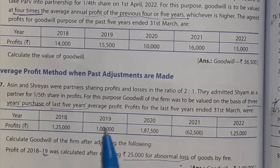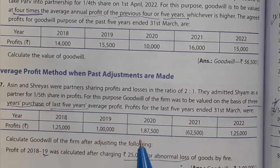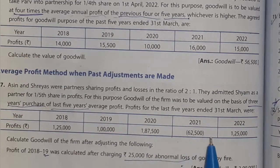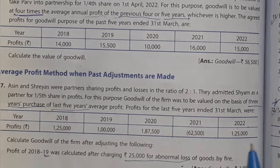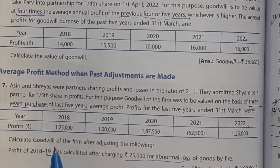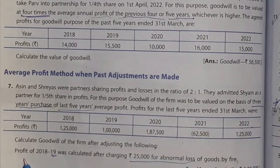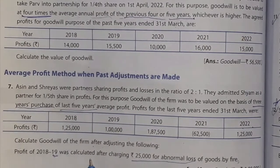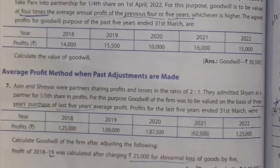Profits for the last 5 years under 31st March: Year 2018 profit was 1,25,000; 2019 profit was 1,00,000; 2020 profit was 1,87,500; 2021 profit was 62,500; 2022 profit was 1,25,000. Calculate goodwill of the firm after adjusting the following: profit of 2018 and 2019 was calculated after charging 25,000 for abnormal loss of goods by fire.